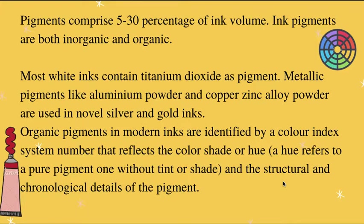Ink pigments can be both organic and inorganic. Nowadays we use inorganic pigments — for example, white ink contains titanium dioxide as a pigment, and metallic pigments contain aluminum powder, copper, or zinc, providing silver or gold ink. If you are using silver ink it will contain aluminum powder, and gold ink will contain copper-zinc alloy powder. Pigments are identified by a color index system, which reflects the shade, hue, and structural details of the pigment.